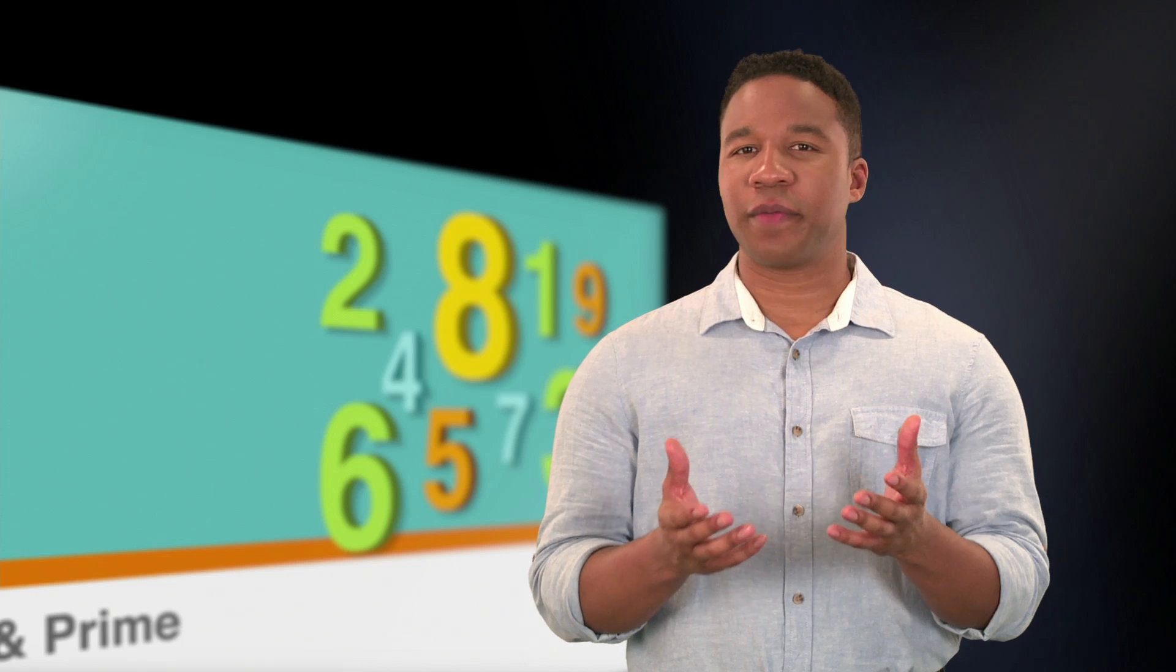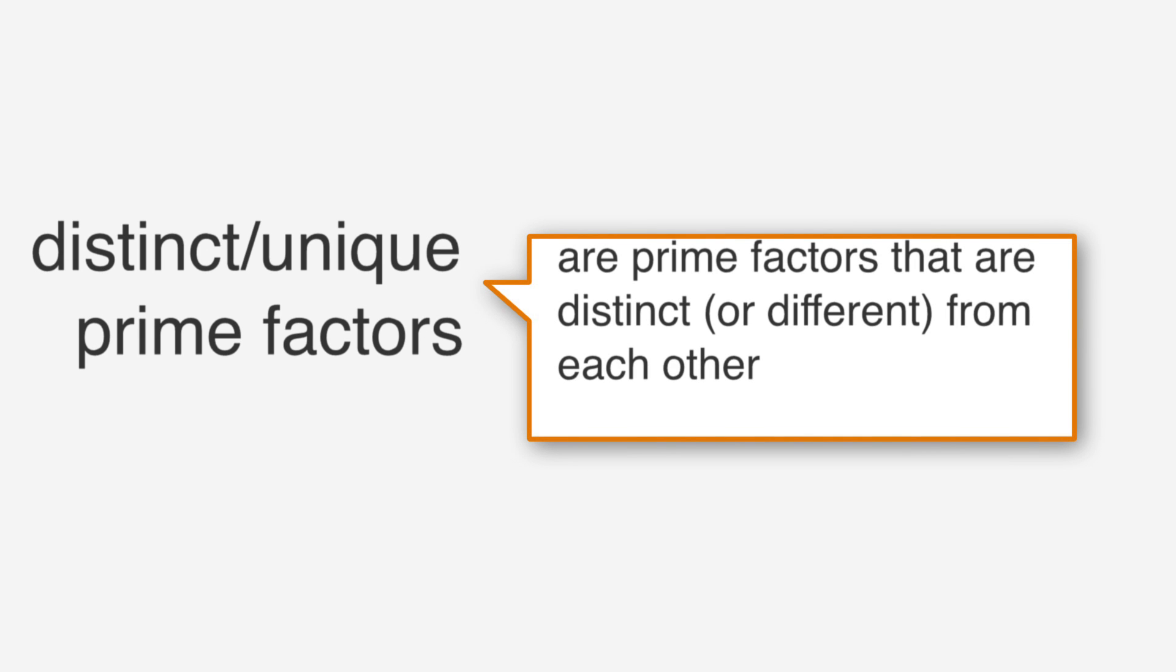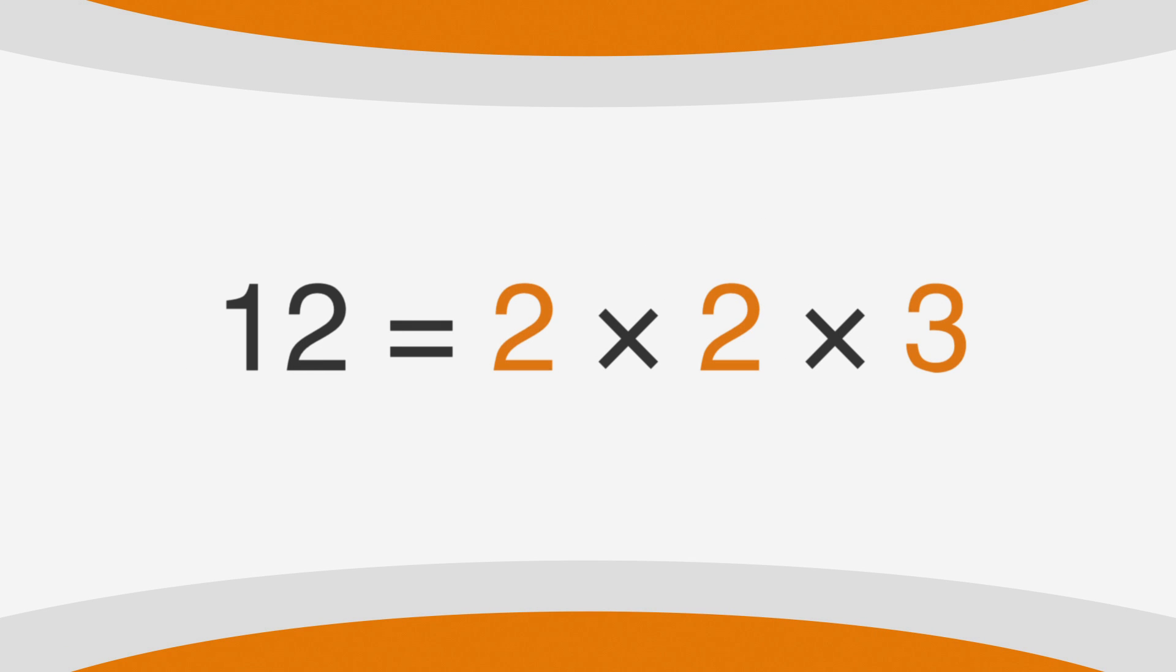Something else that the GRE may test you on is distinct or unique prime factors. As opposed to all the prime factors that go into a number, the distinct or unique prime factors are distinct or different from each other. For example, the prime factors of 12 are 2, 2, and 3. But the distinct prime factors are 2 and 3.